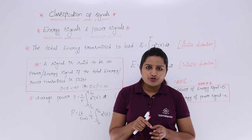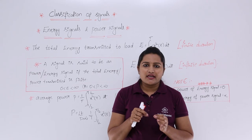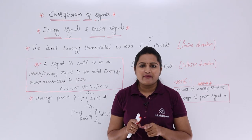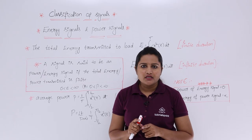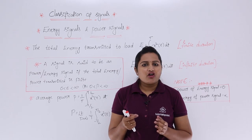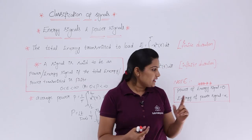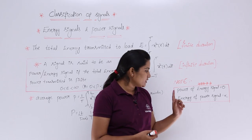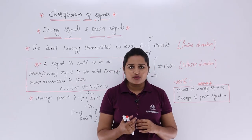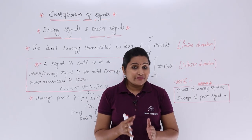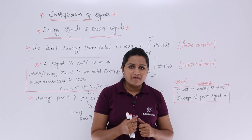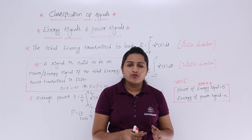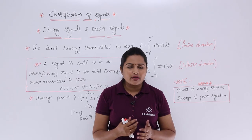To summarize: if a signal is an energy signal, the total energy carried must be finite. If a signal is a power signal, the total power carried must be finite. A signal cannot be both energy and power signal at a time. Remember: power of an energy signal equals 0, and energy of a power signal equals infinity. In the next class, we will solve different problems related to energy and power of signals, including problems from GATE and GATE model papers.